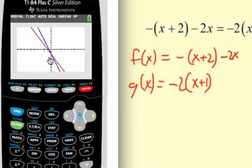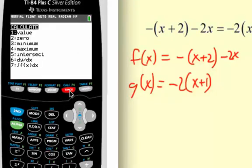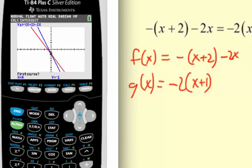So we want to know the point of intersection here for solving the equation. I'm going to put second and then f4, which is calc, and then intersection, which is number 5. The calculator by default, if there are only two functions graphed, will pick the first one, the second one, and then calculate the intersection. So you hit enter for the first curve, enter for the second curve, and then it says to guess, you enter one more time.